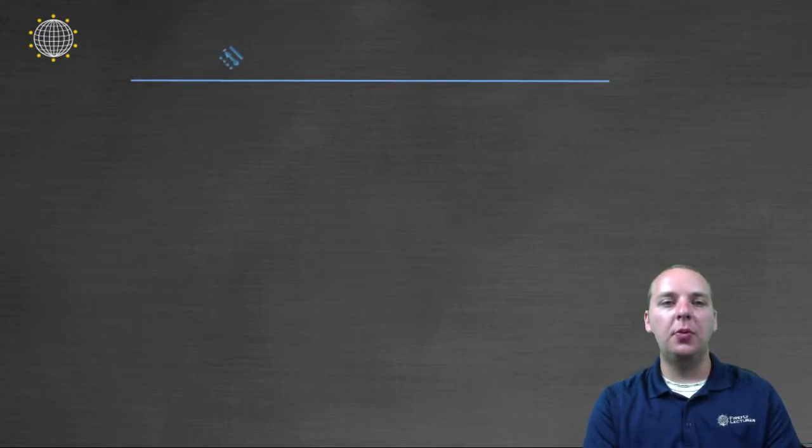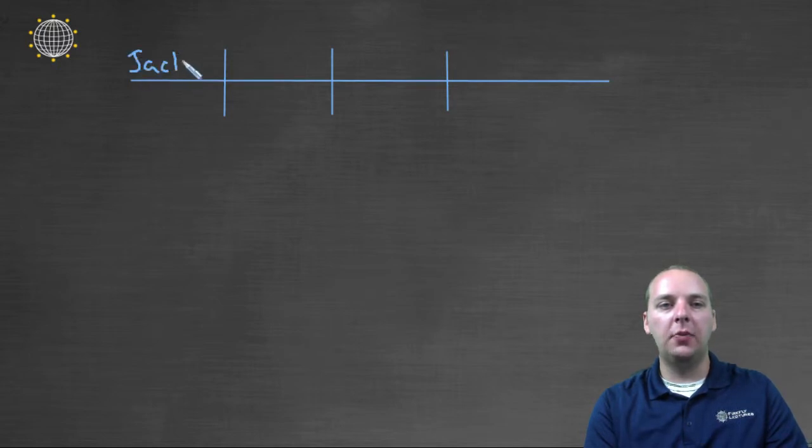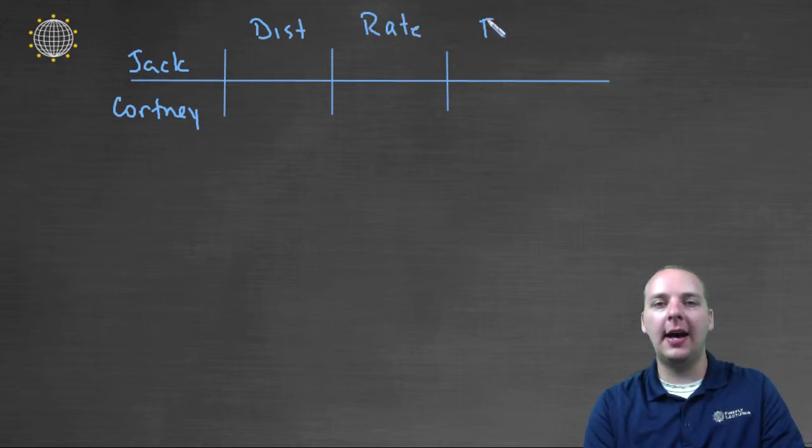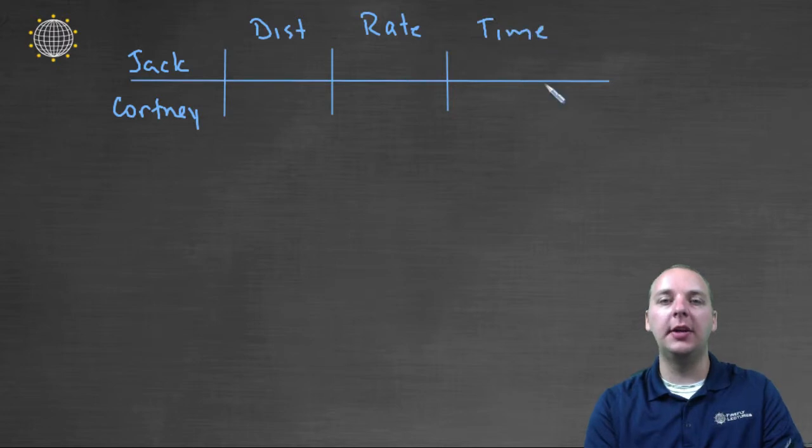So we'll have something like this. Let's make a table, and we'll make a row for each person. Okay, and the columns, you'll have distance, rate, and time. So I'll have something like this for our columns. Alright, so let's see here, let's fill in the blanks. Let's see, we have one row for Jack, and we'll have another row for Courtney. Alright, and then the columns will have distance, the distance that they traveled, the rate at which they traveled, and the time that they traveled that particular rate.